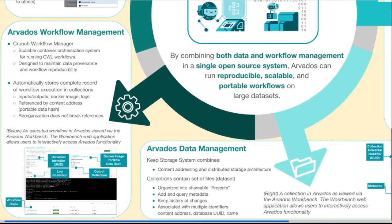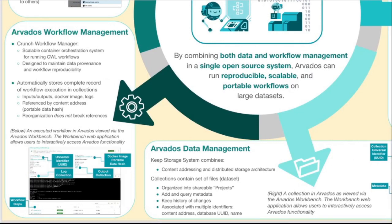When you submit a workflow, Arvados keeps detailed records of each workflow step run by the system. This includes input and output collections, container images that provide the software environment, hardware resources that were requested, and logs of both the program itself and the program's resource usage on the compute node. Inputs and outputs are stored by content address — these are immutable identifiers of content. This means that reorganization and changes to collections do not break references. In the case of a collection changing, it will just refer to an older version of the collection.